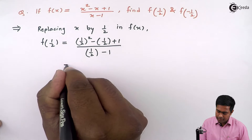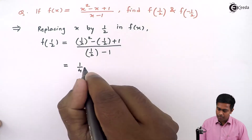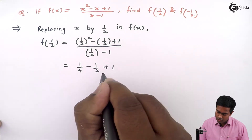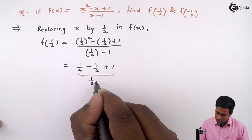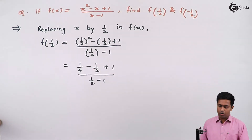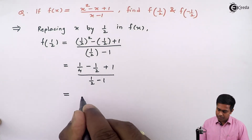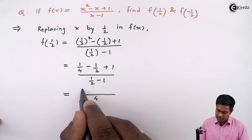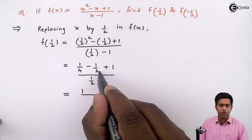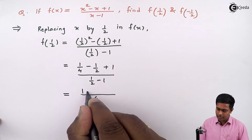If we solve this we will get 1 upon 4, which is the square of 1 by 2, minus 1 upon 2, plus 1, whole divided by 1 upon 2 minus 1. Now to solve this we will find the LCM in the numerator as well as in the denominator. In the numerator we will get 4 as LCM. So we copy down 1 as it is. Here to get 4 we multiply 2 by 2, so we get minus 2.